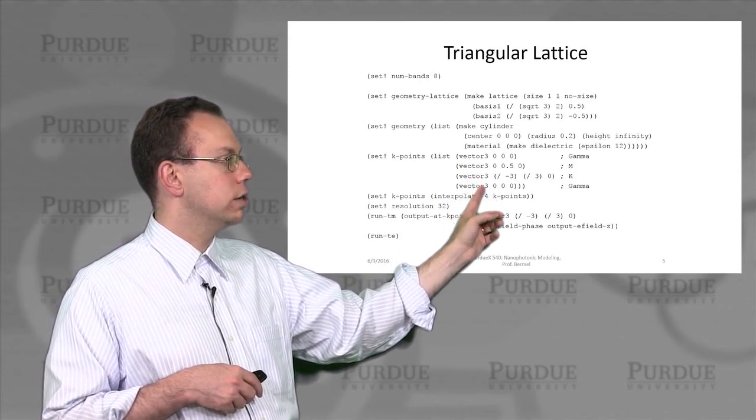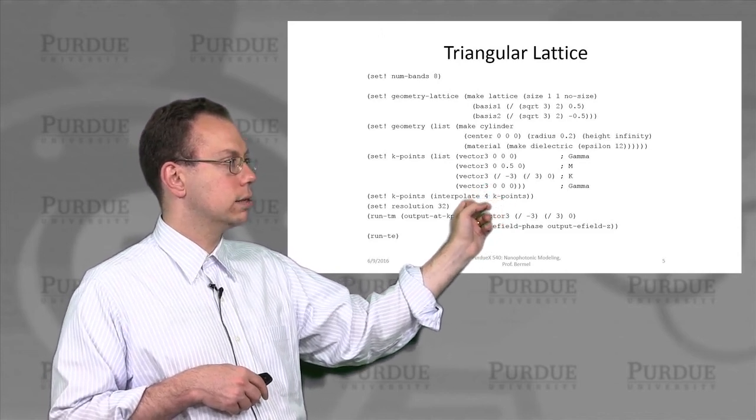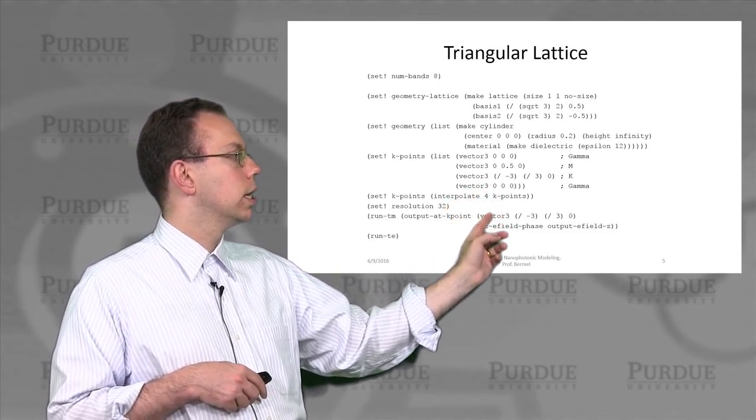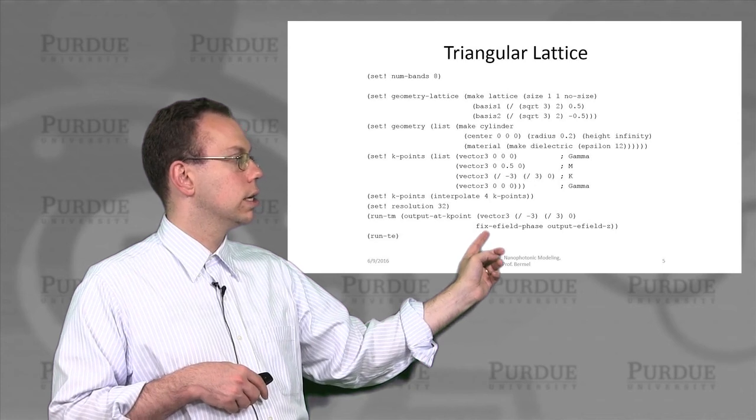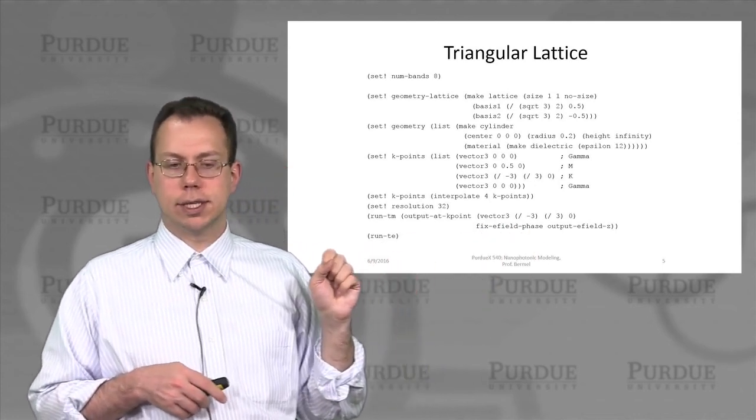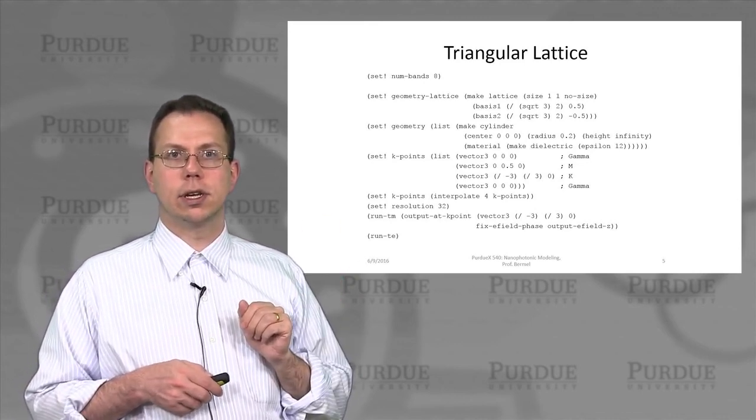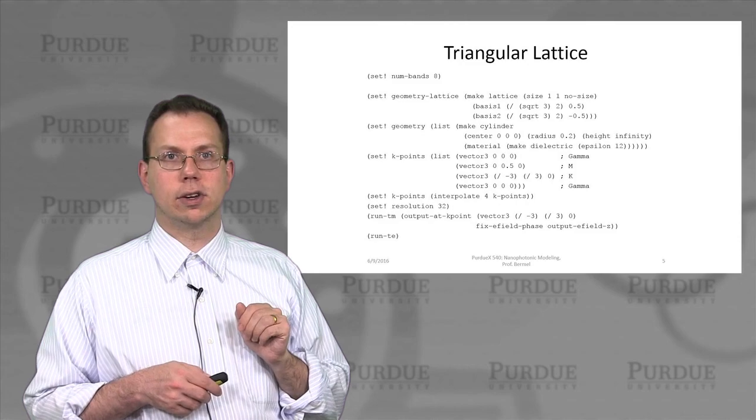but of course we've changed the k values to use the so-called k point instead of the x point that we had earlier. You can see also that we might output the e field to see what it looks like as well as the epsilon. In the next lecture, we'll actually look at the results of running this triangular lattice calculation.